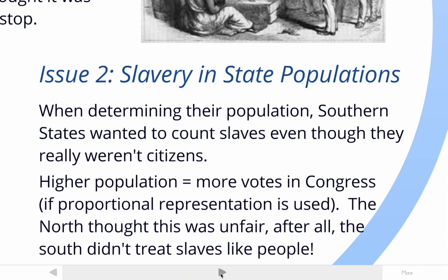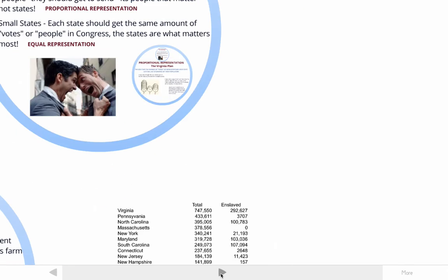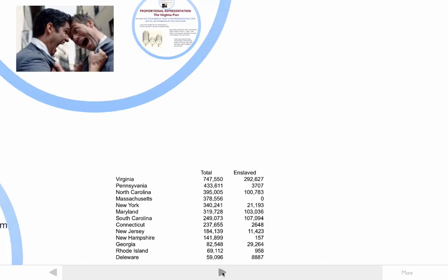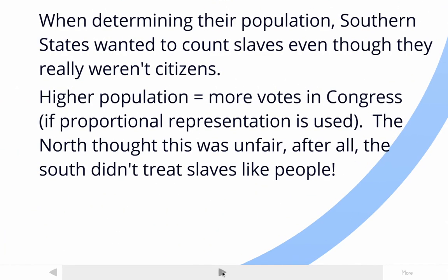The second major issue with slavery had to do with state populations. If the Virginia Plan were passed, population would become important, and Southern states wanted slaves to count as people when determining population — even though they weren't really voting citizens. If Virginia didn't count their slaves, they would lose 300,000 people and actually be smaller than Pennsylvania. Massachusetts would stand to gain because they wouldn't lose any members from their population. The Northern states didn't think it was fair to count slaves in the population since they didn't get to vote or have any say — after all, the South didn't treat slaves like people, so why should they count them in population?